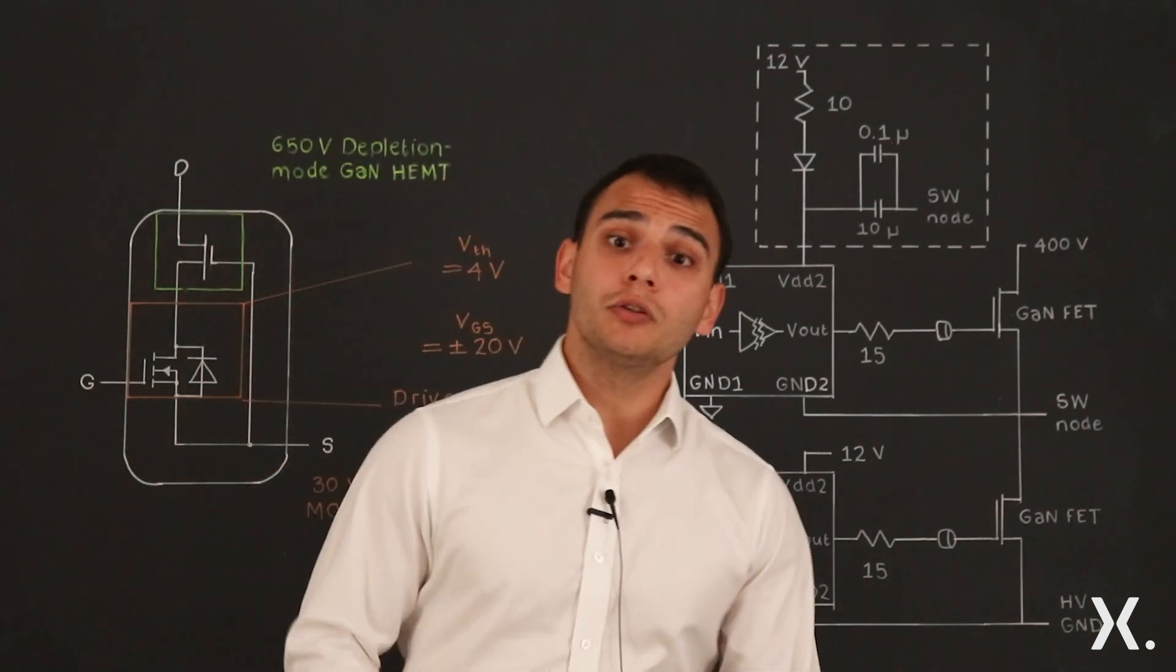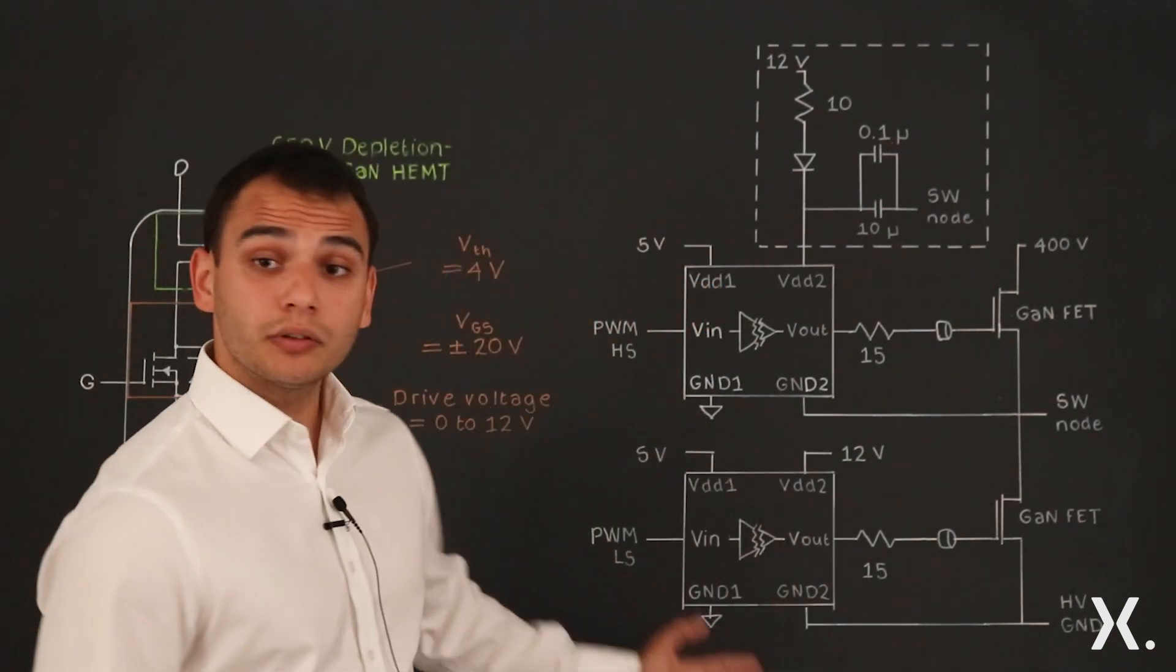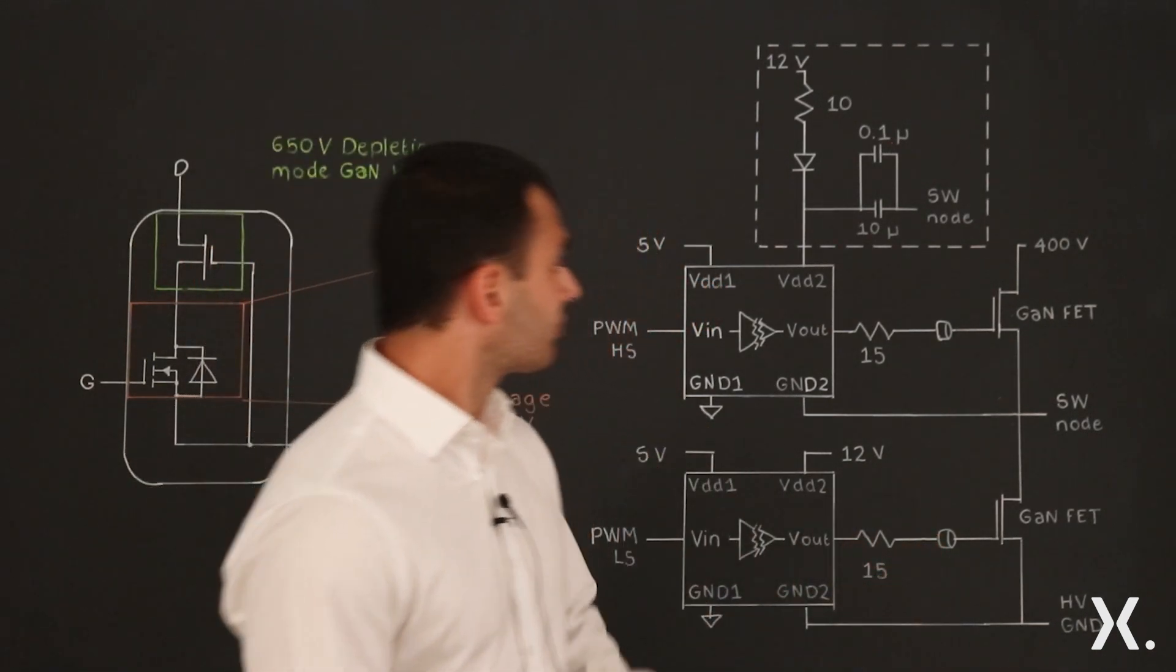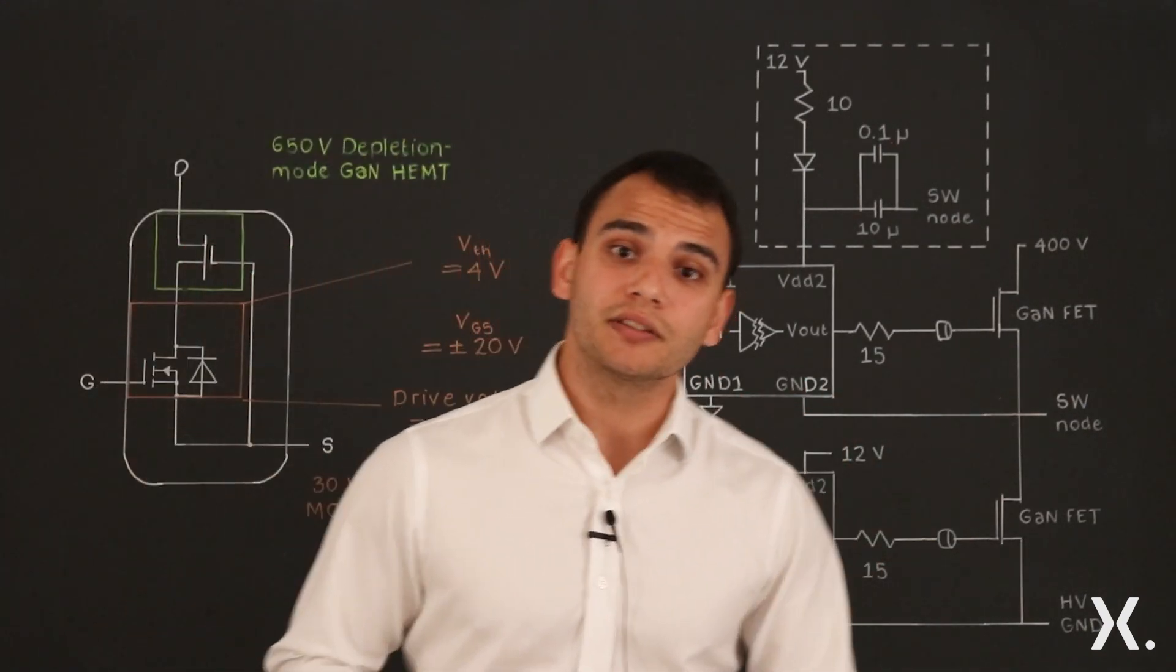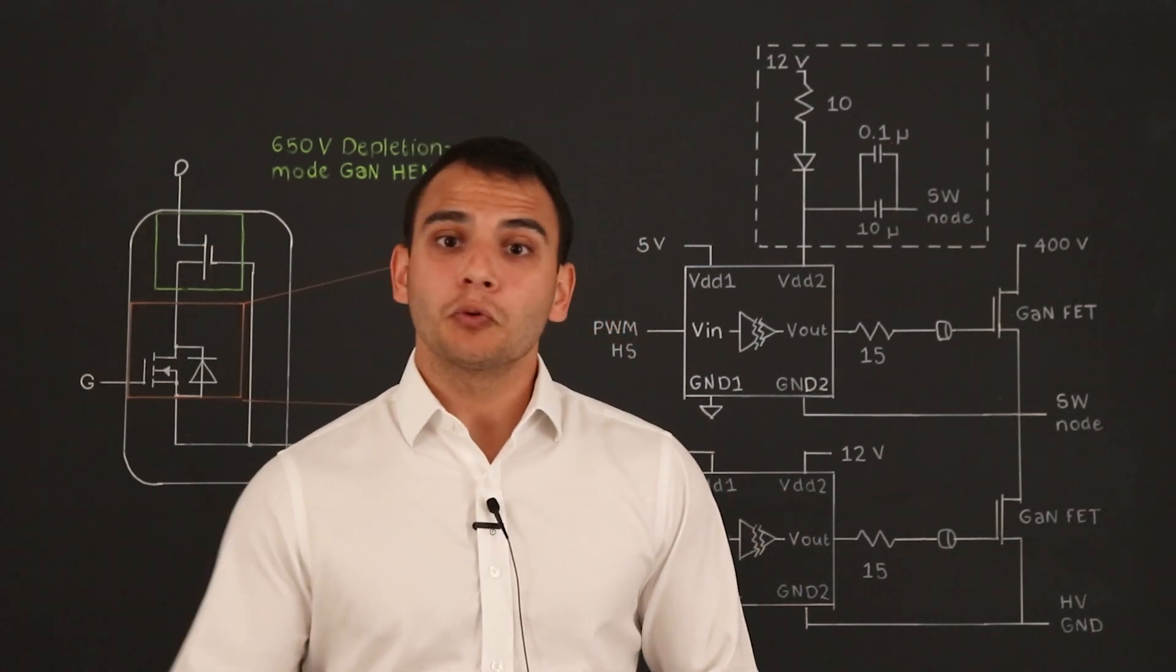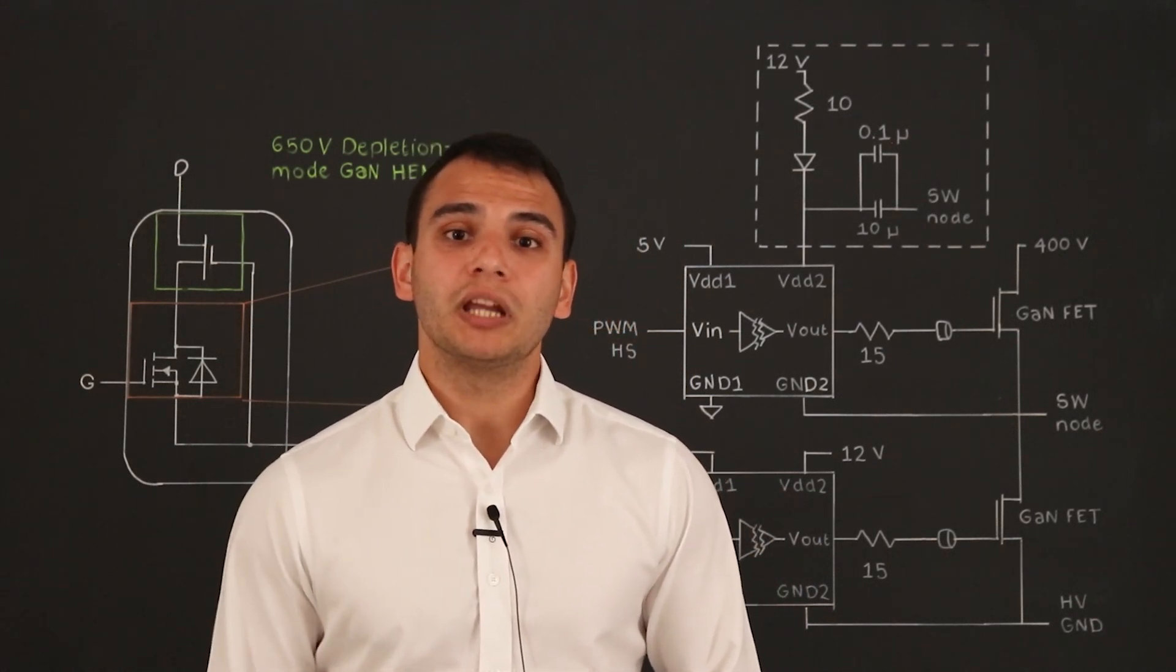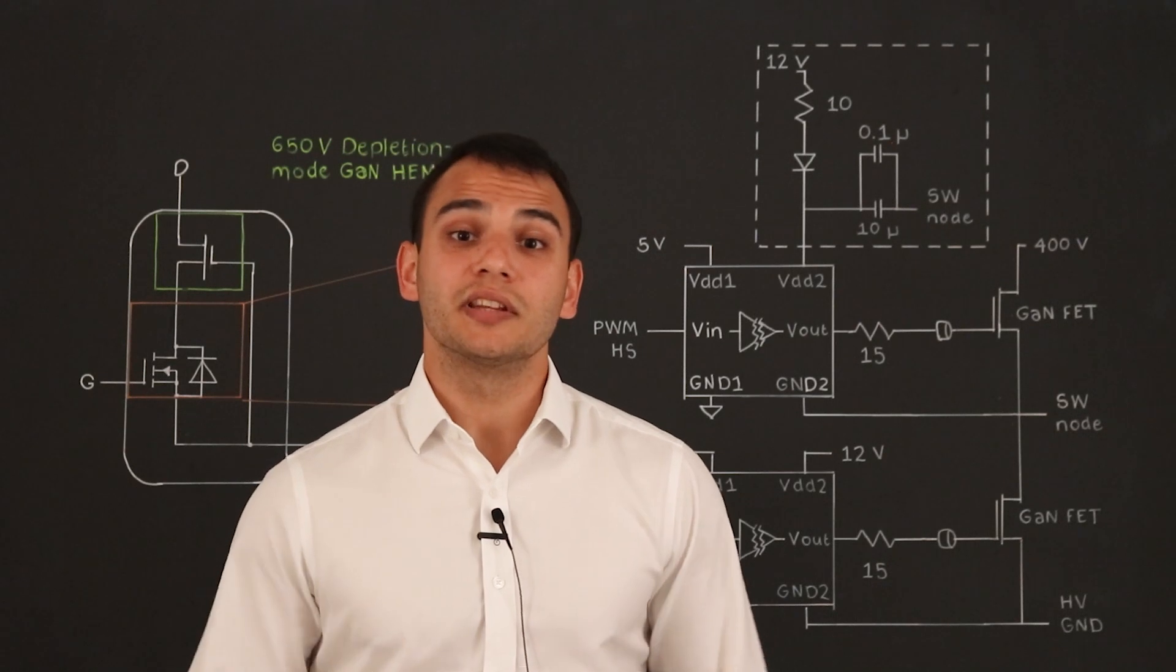So it's really that simple. You can use a generic gate driver, a few resistors, ferrite bead, and a bootstrap circuit, and you can drive Infineon GaN FETs. Thank you for watching this quick learning video, and if you want to learn more, please visit Infineon.com.